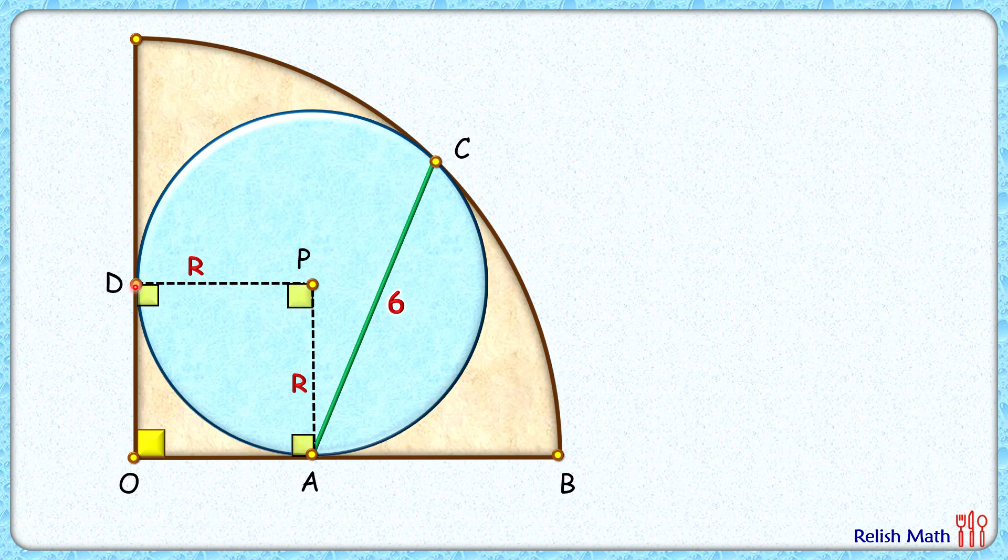Now let's use a circle theorem: when two circles, the blue circle and the brown circle, are touching each other, their point of contact and their centers all three points lie in a straight line. Now here PO is the diagonal.